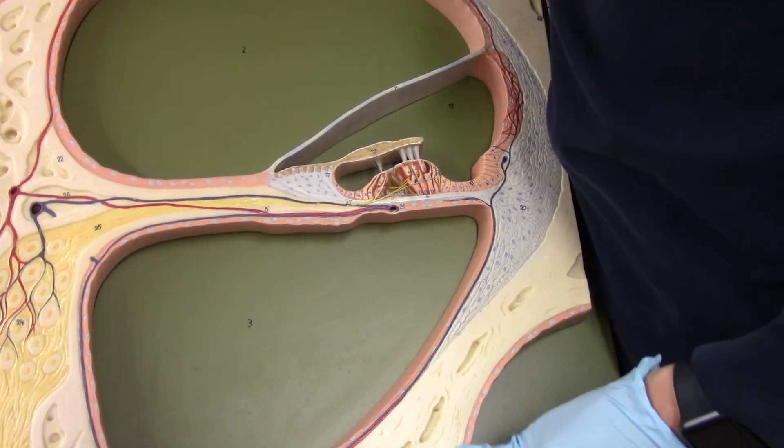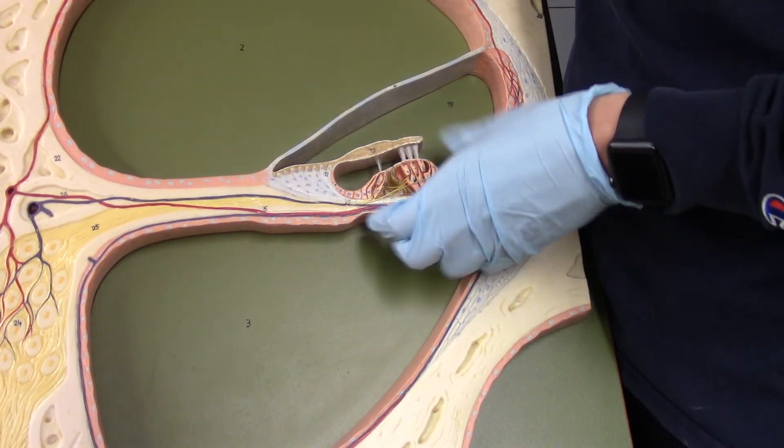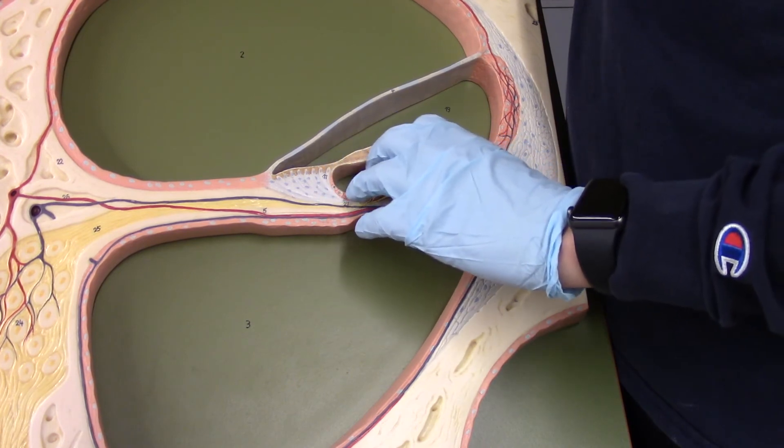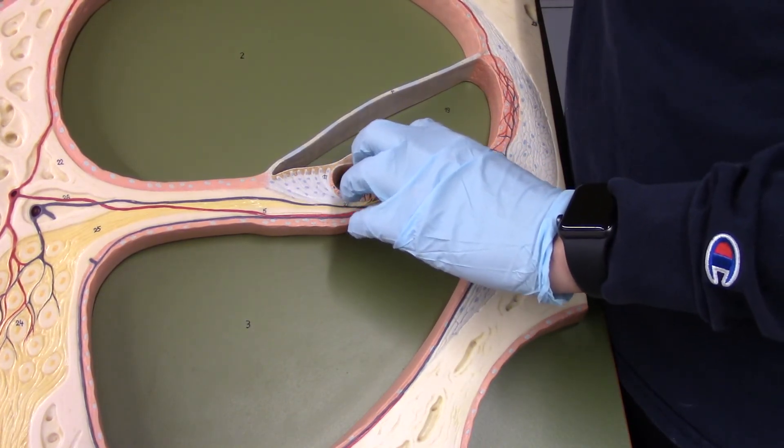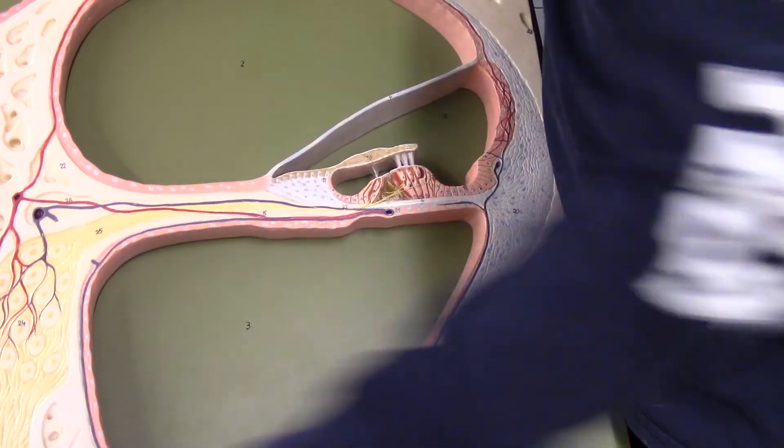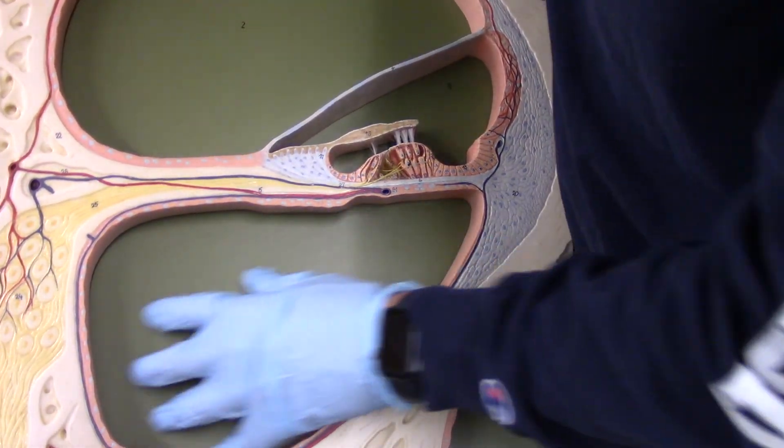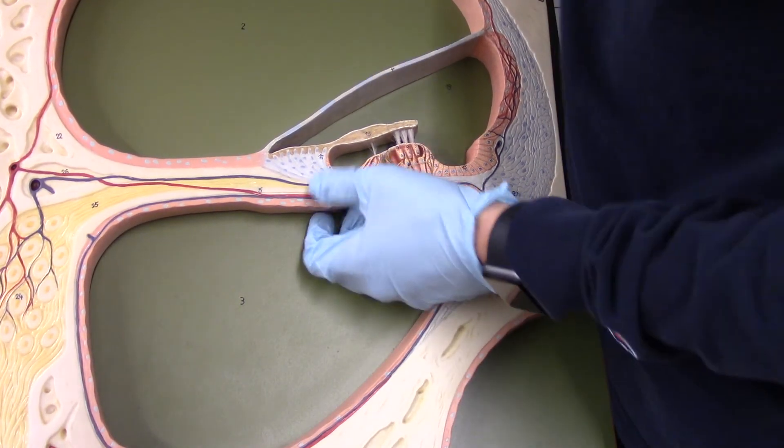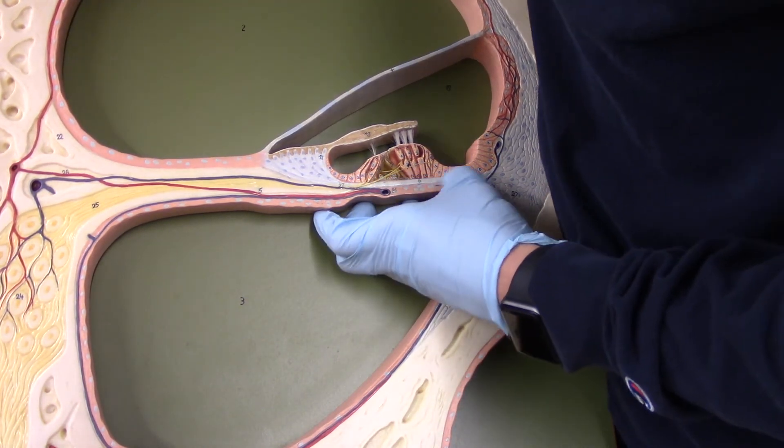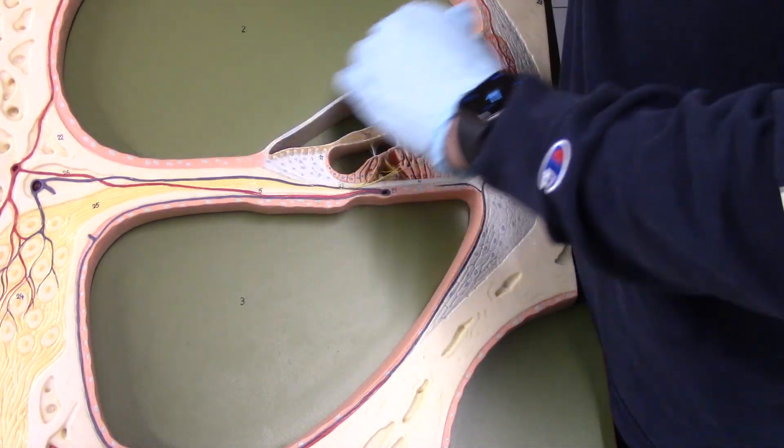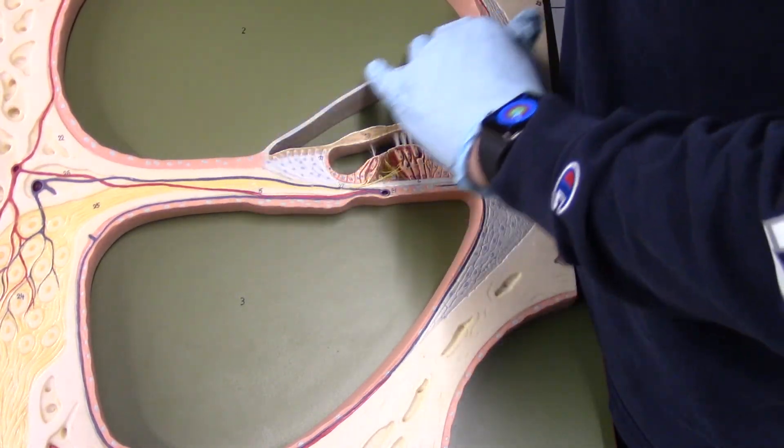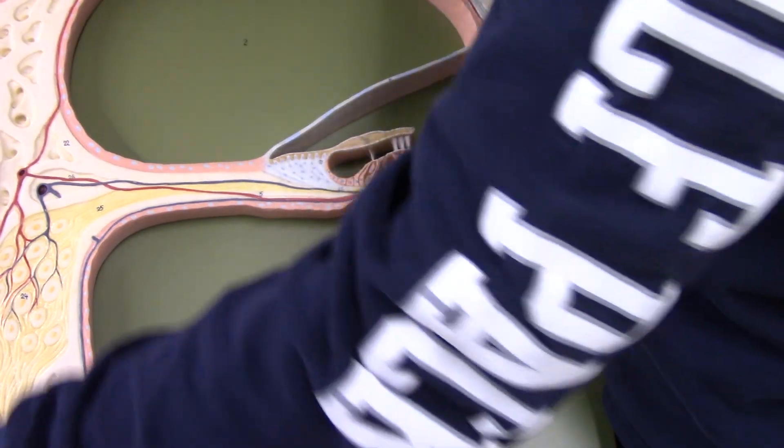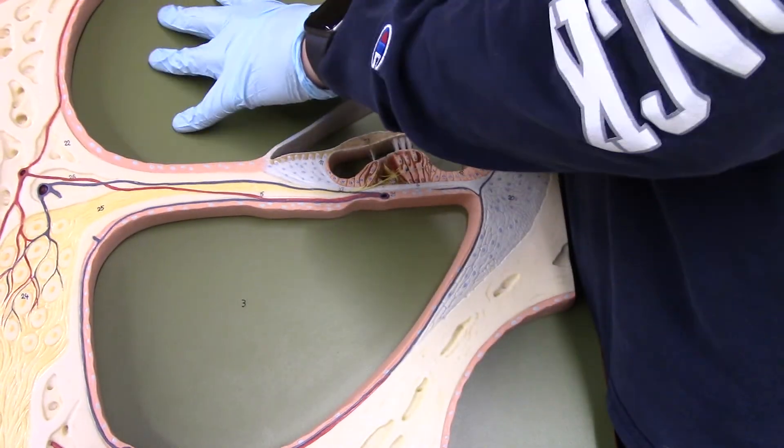A couple other things you guys are going to need to know. For example, this entire structure right here is going to be the organ of Corti. And you can see some hair cells in here. And all that good stuff. We have our tympanic duct down here. A couple other things you guys need to know besides the hair cells. You guys will need to know the basilar membrane, which is this membrane right here. Your vestibular membrane is up here. So that structure that's dividing the vestibular from cochlear ducts.